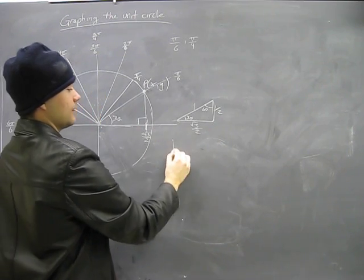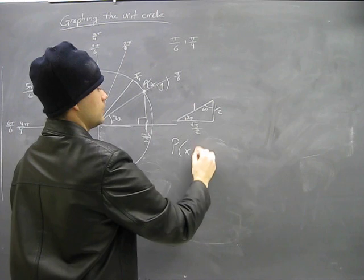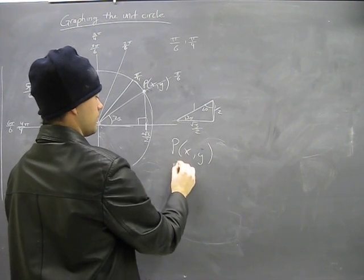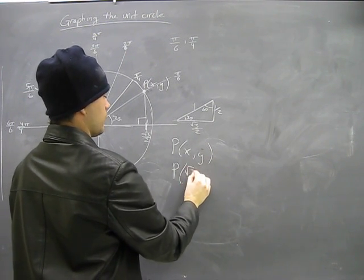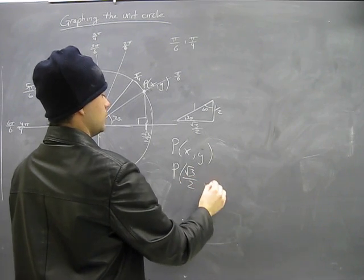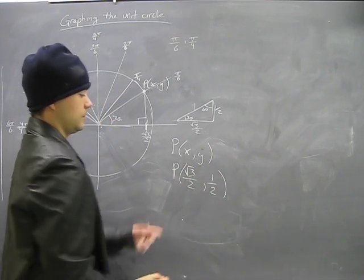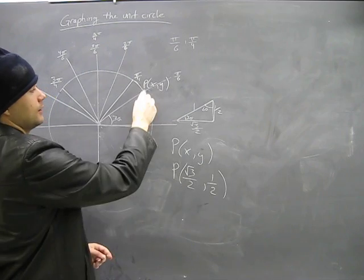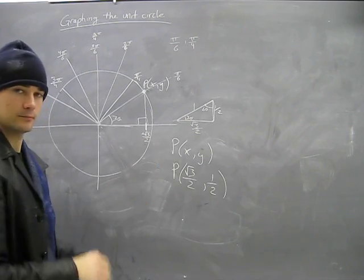...equals x is root 3 over 2, comma 1 over 2. This is your point p at this particular point. Simple.